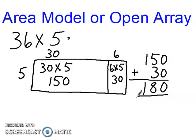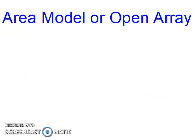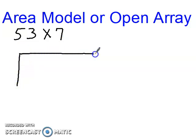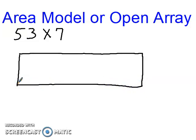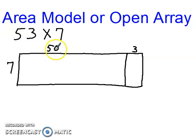Our next example is 53 times 7. I'll draw a slightly bigger model this time. I have 7 on the side, and 53 is quite a bit bigger than 7, so I want my model to be somewhat proportional. I'll decompose 53 into 50 and 3. Since 3 is much smaller than 50, it's not going to get a lot of room in the model.